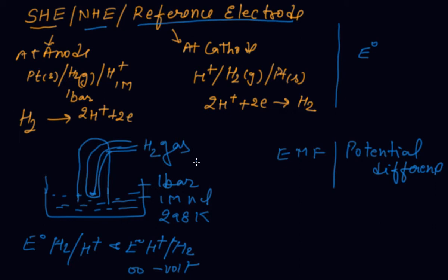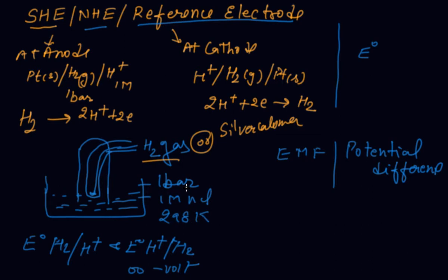Next, what is EMF? The standard hydrogen electrode is used because in hydrogen both oxidation and reduction can take place. Nowadays, SHE is not commonly used; in its place, we use the silver calomel electrode, because platinum is poisonous and it is very difficult to maintain the conditions of one molar HCl, 298 Kelvin, and one bar pressure.